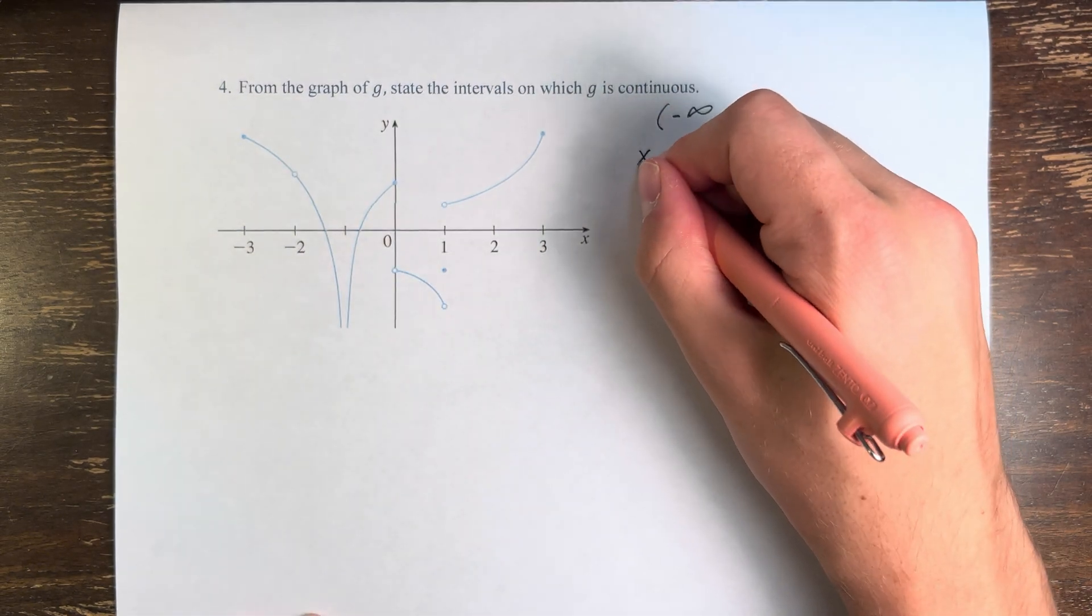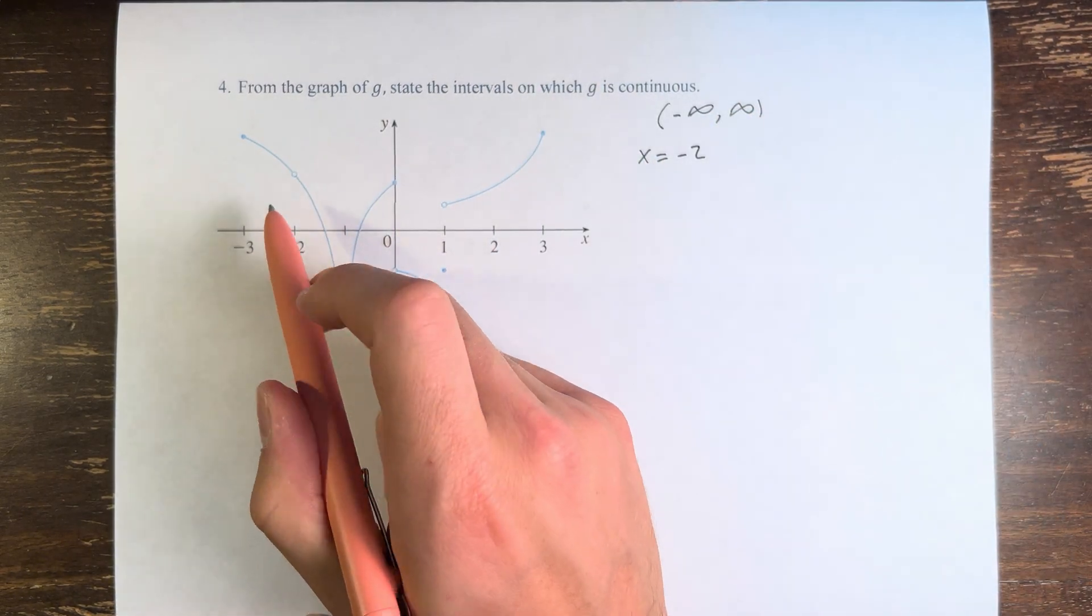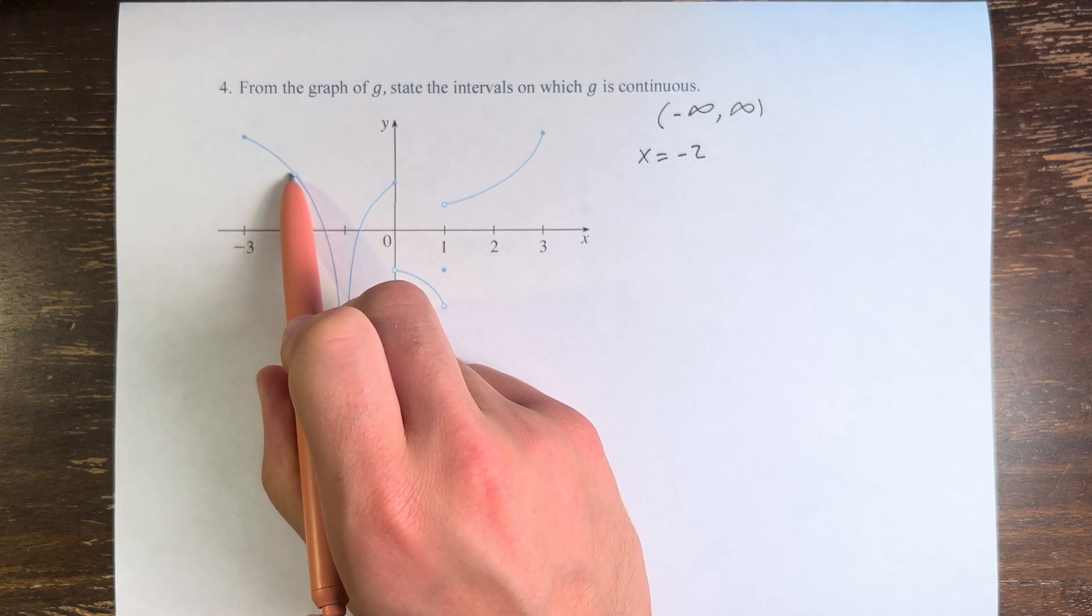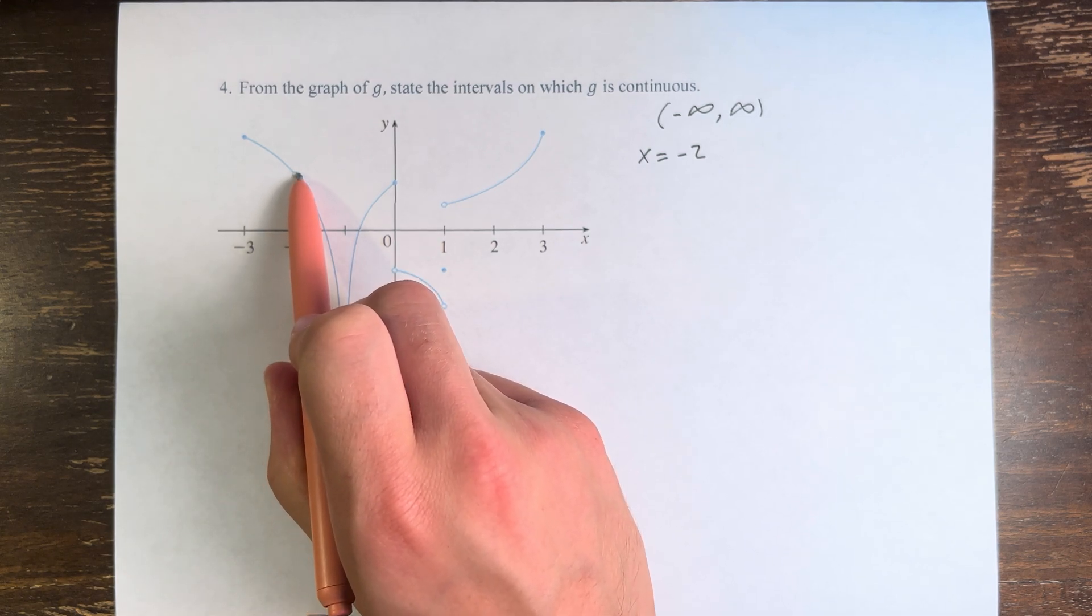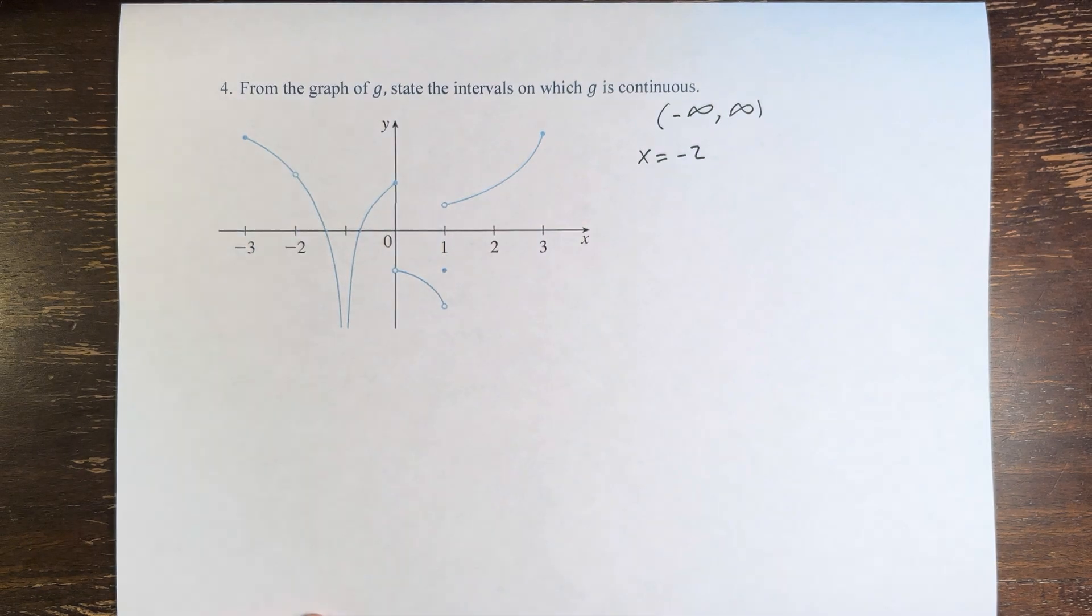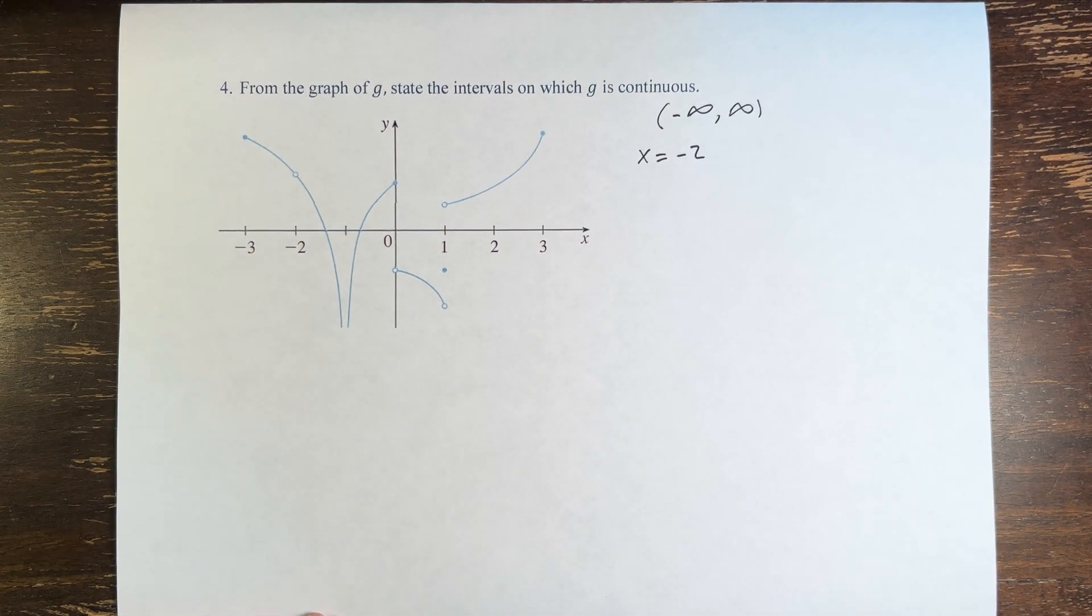So we can see at x equals negative 2, the function is approaching the same point from both sides, but it's not equal to the value of the function because we have an open circle, which means that the function does not equal whatever this value is at x equals negative 2.